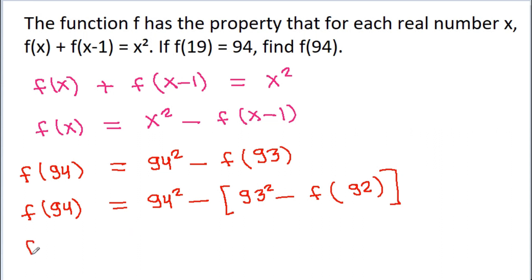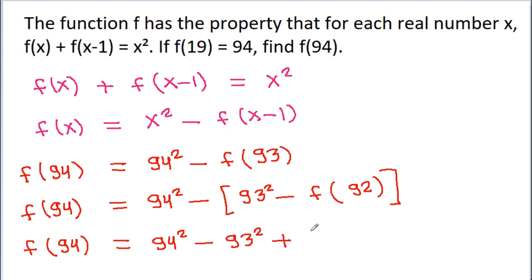And f(94) will be equal to 94 squared minus 93 squared minus f(92), and f(92) will be equal to 92 squared minus f(91).